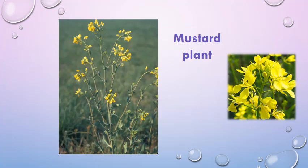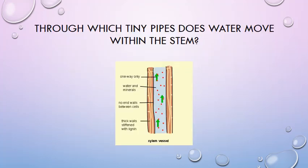Many plants such as mustard have a waxy layer cuticle around the stem to reduce water loss. Now there is a question: through which tiny pipes does water move within the stem?